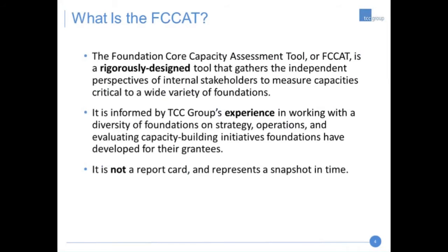Starting with the overview of the FCAT: what is the FCAT? The Foundation Core Capacity Assessment Tool is a rigorously designed tool that gathers independent perspectives of internal stakeholders at the foundation to measure capacities critical to a wide variety of foundations. The impetus for the FCAT is straightforward. For many years, the social sector has witnessed an increase in attention paid to nonprofit and grantee capacity, but comparatively little formal, field-wide examination of the kinds of institutional capacity needed by foundations to deliver on their mission beyond that narrow focus on grantee perceptions. TCC Group has partnered with foundations to start a conversation around what their own capacity for grant making and complementary activities entails, and the FCAT emerged from this body of work.